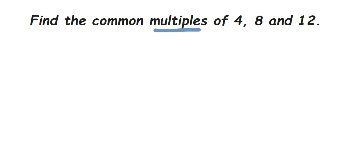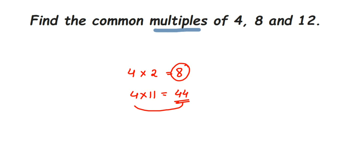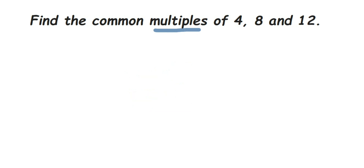Find the common multiples of 4, 8, and 12. Multiples are the numbers which appear in the 4, 8, and 12 tables when you multiply. For example, 4 times 2 is 8, so 8 is a multiple of 4. 4 times 11 is 44, so 44 is a multiple of 4. The easy way to find multiples is to just write down the table of that number.